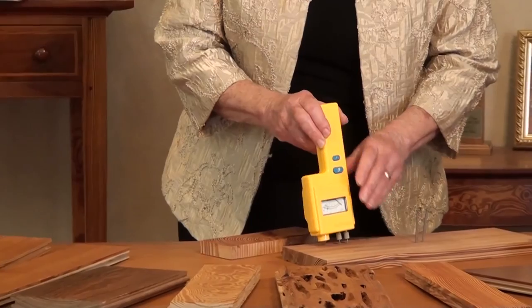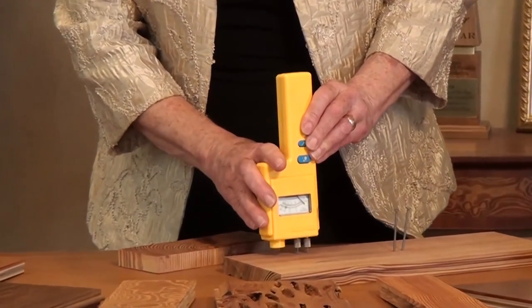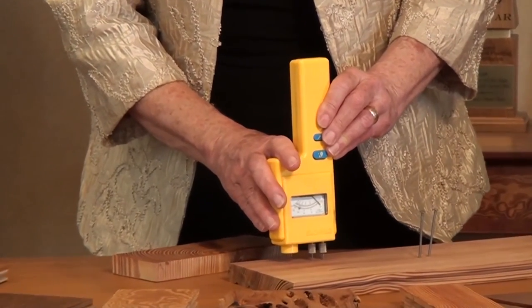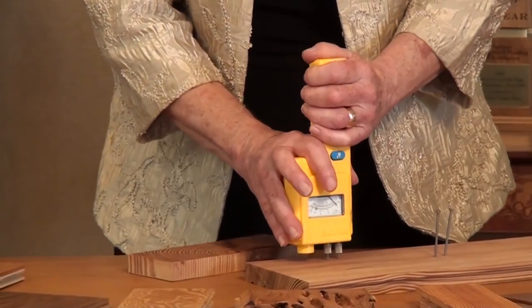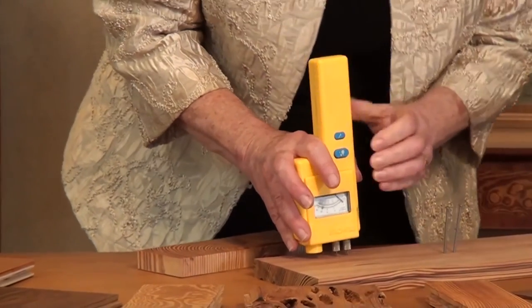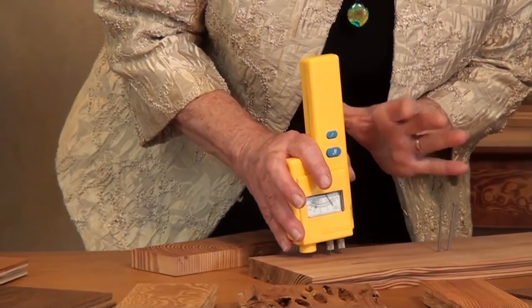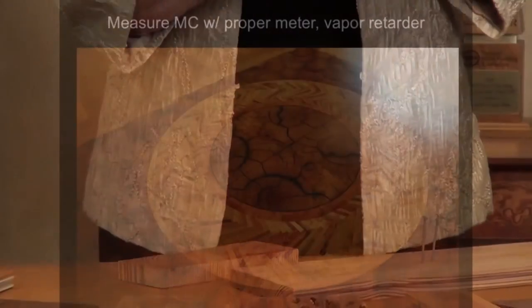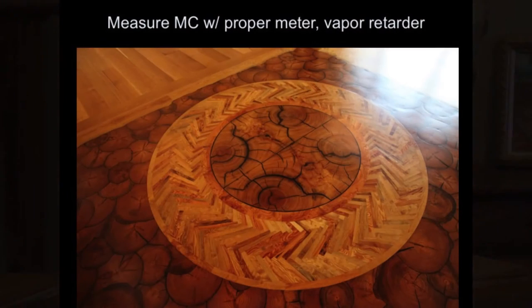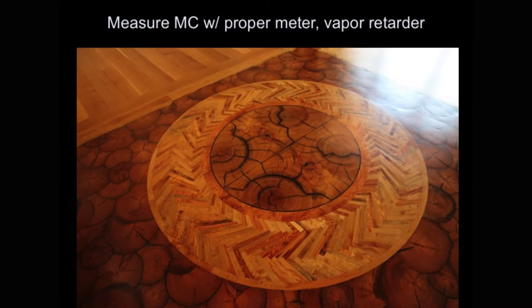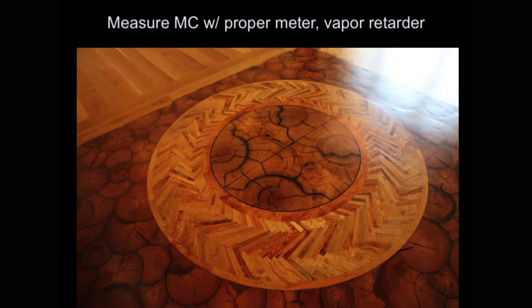You have to orient the pins with the grain of the wood because that's how these meters are calibrated. Insert it into the wood and measure the moisture content. He knew this wood needed to be at about eight or nine percent, so it went in well for the long term. I'm going to show you how to figure out what moisture content you should expect for a wood floor.